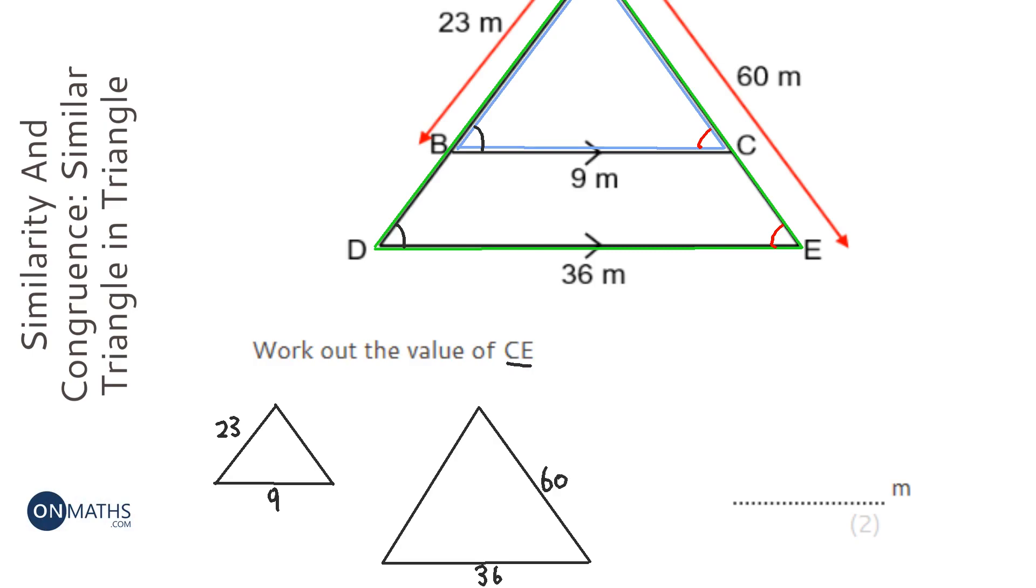Now it asks for the value of CE, which is this bottom length here. That's the bit we're trying to find. But I'm going to ignore that and work out what AC is. The reason for that is if I know AC, I can take it away from 60 to work out CE, because I know the total distance is 60.